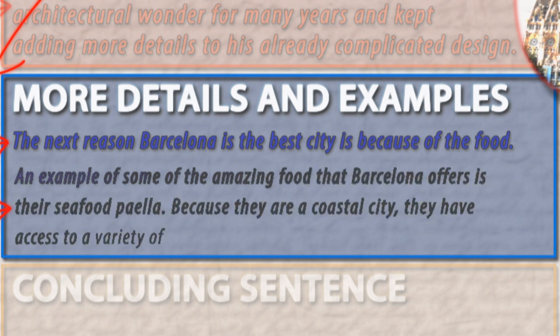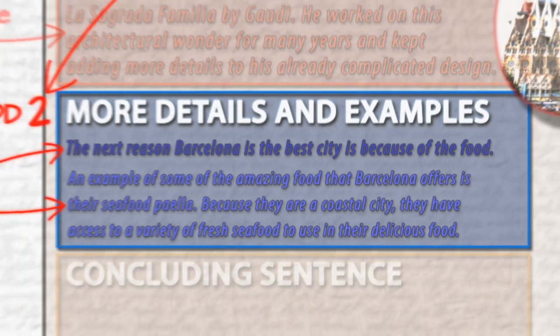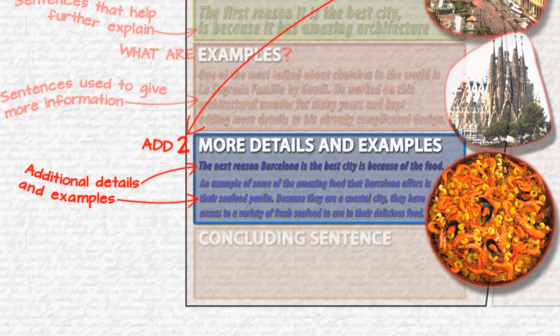Second example. An example of some of the amazing food that Barcelona offers is their seafood paella. Because they are a coastal city, they have access to a variety of fresh seafood to use in their delicious food.